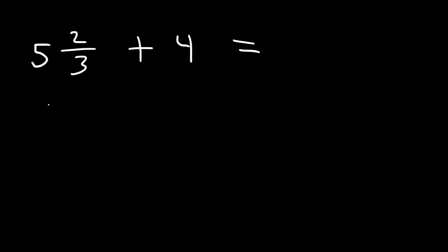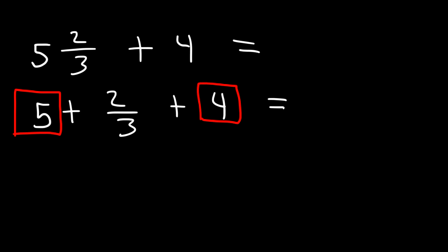5 and 2/3 is basically 5 plus 2 over 3. So all we need to do is just add the whole numbers 5 and 4. So 5 plus 4 is 9, and therefore we have 9 plus 2 over 3.